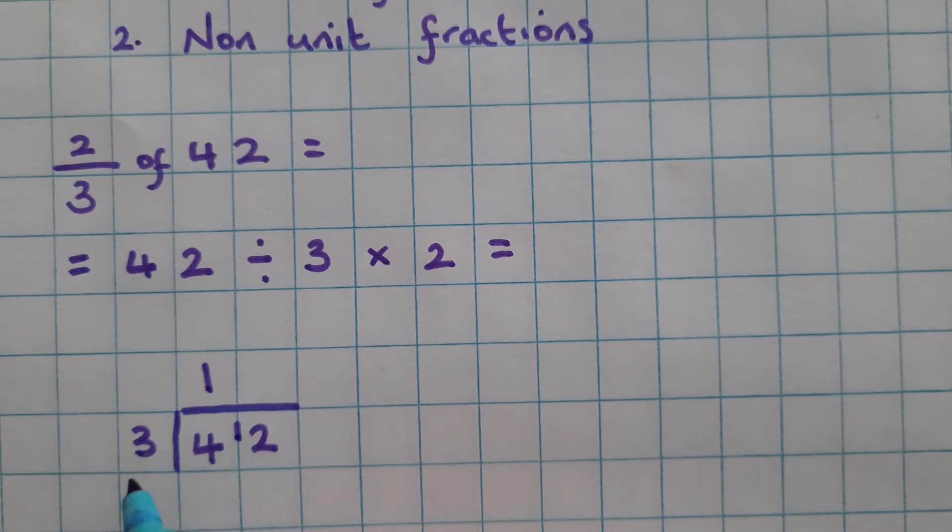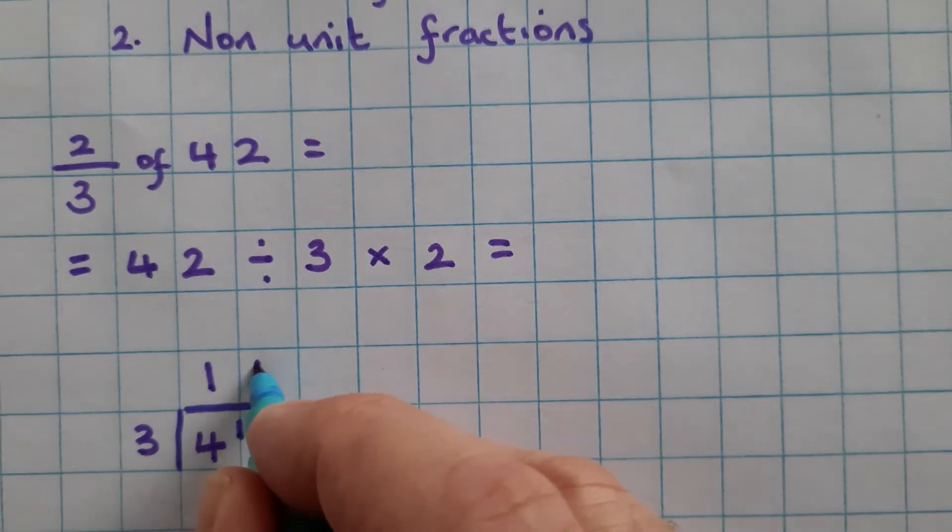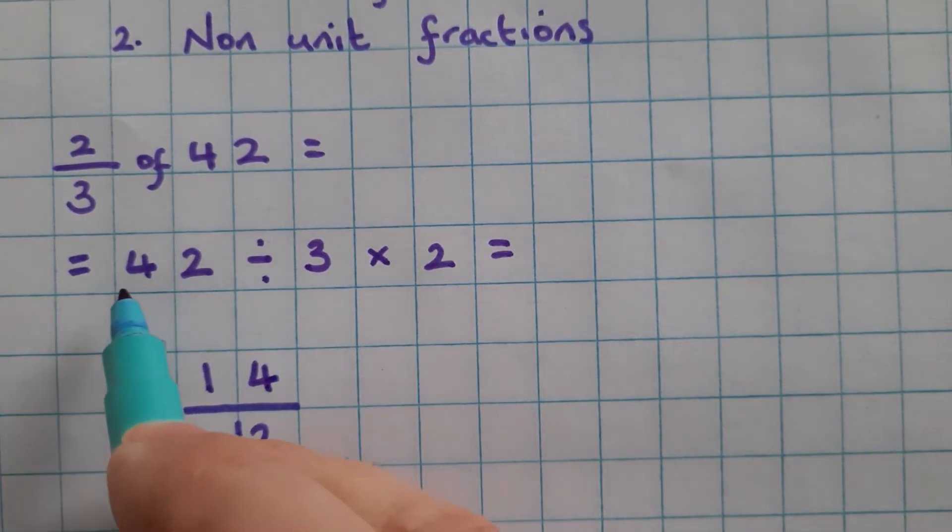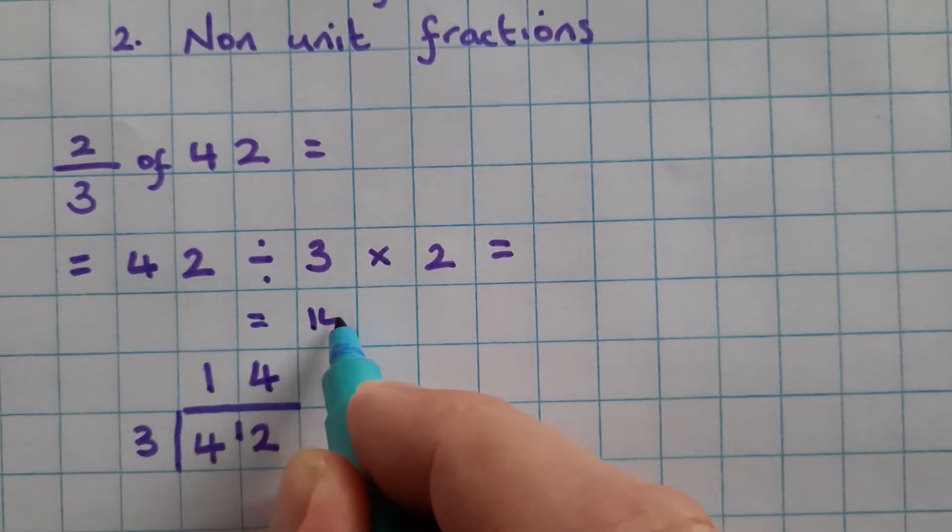12 divided by 3, or how many groups of 3 can we get from 12? Well the answer is 4. 14. 42 divided by 3 equals 14.